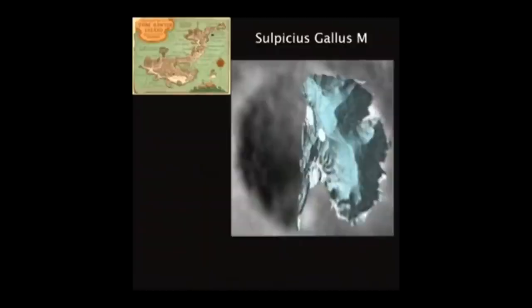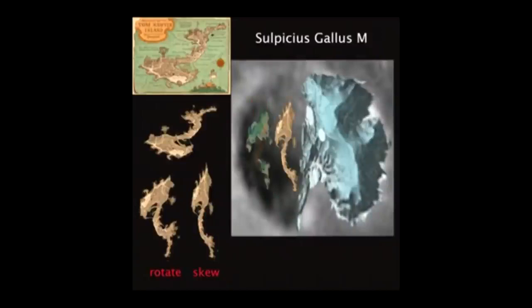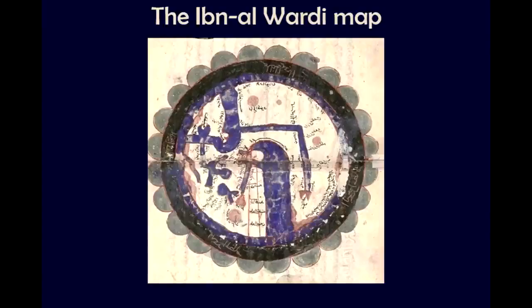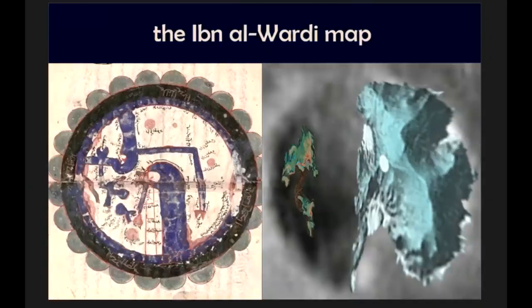And that brought me to the Tom Sawyer Island map. There I discovered that the continents are at a completely different position than we are being told. It seemed like the continents on the Tom Sawyer map were fitting in the crater. Next thing I discovered was the Ibn Alwardi crater map. This map seems to be confirming the Walt Disney map — again, the Americas lying at the wrong place.